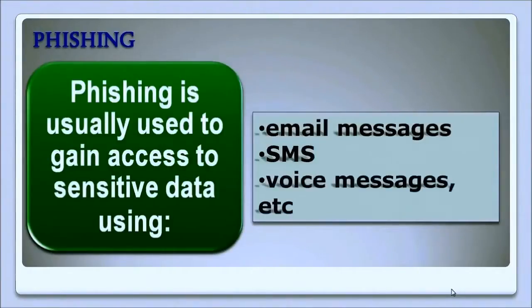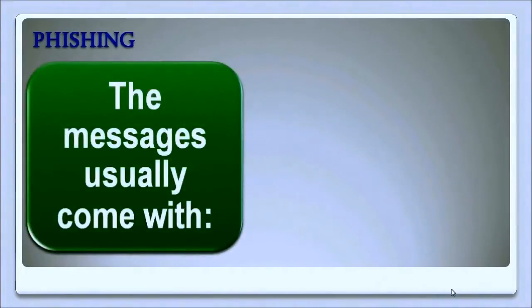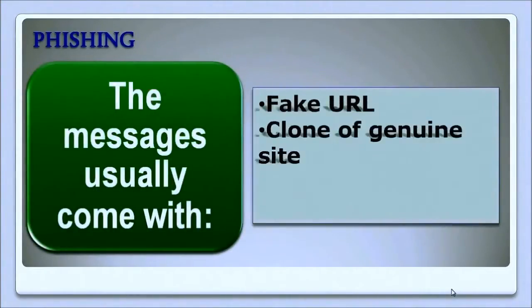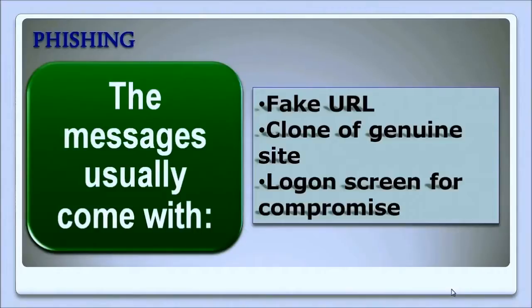Phishing is usually used to gain access to sensitive data using email messages, SMS, voice messages, and so on. It is similar to pretexting in that it uses communication. The messages sent usually come with a fake URL or a clone of a genuine site — a URL leading to a clone of the genuine site or a logon screen used for compromise. The fake URL, once clicked, might end up infecting a system with malware which can compromise the system or be used to spread further attacks.